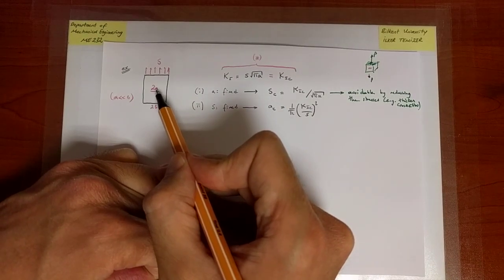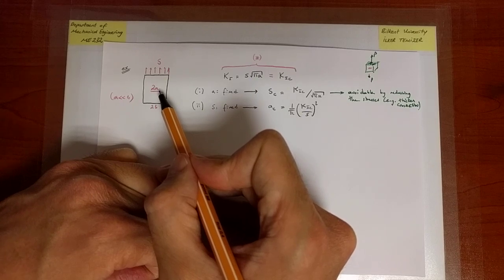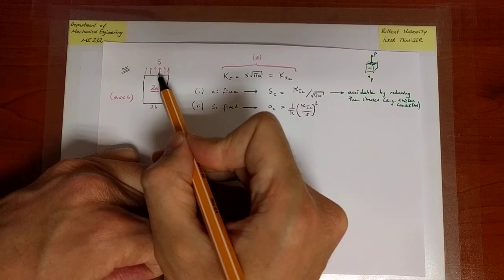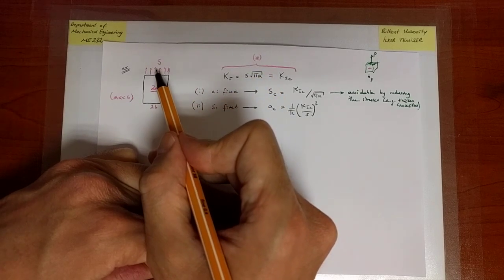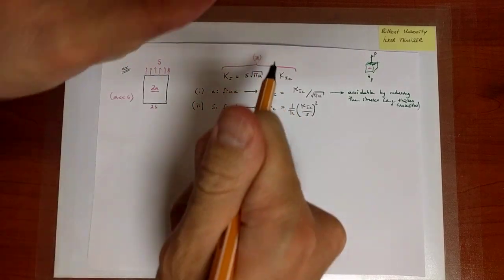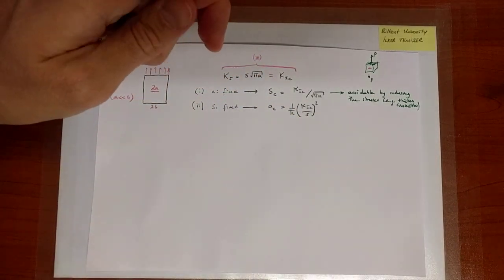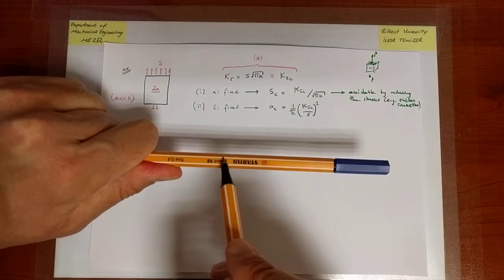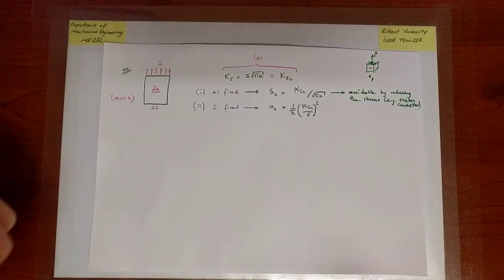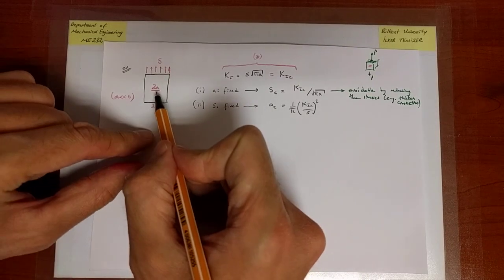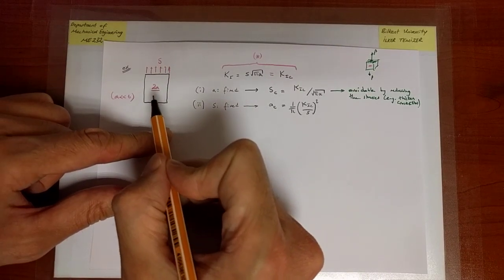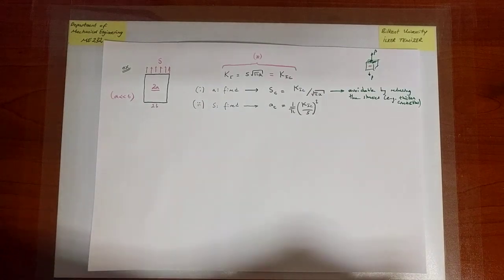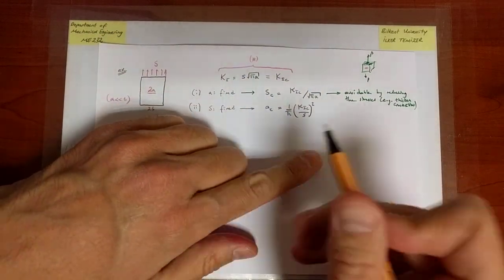Even if the current crack size is far below AC — say AC is one millimeter and the initial crack is one micrometer — we are not necessarily safe. Under cyclic loading, where S repeatedly increases to some value and decreases back to zero (like pulling and releasing, or bending and unbending a rod), that initial tiny crack will sinisterly grow and may eventually reach AC. The initial small crack size does not guarantee safety.